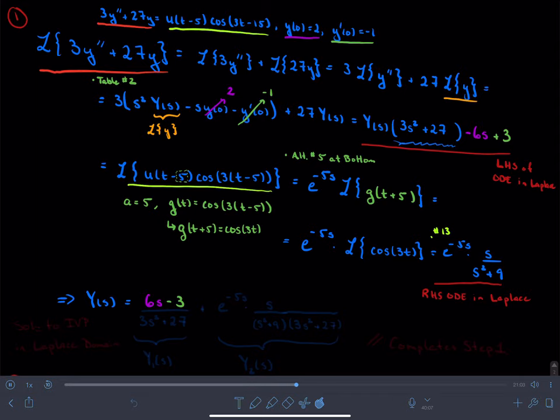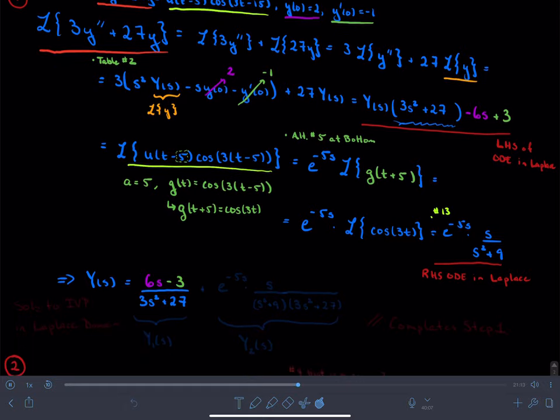So that gives me a 6s minus a 3, and this is all over 3s squared plus 27. And then I also have added to this e to the negative 5s times s over s squared plus 9.